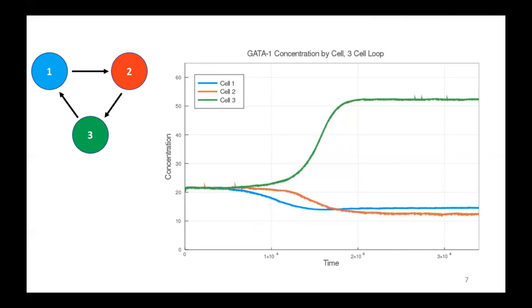simulating three cells communicating in a loop. And what we see is that the expression of GATA1 tells us which fate the cell has selected. So for example, cell three is converging to a state of high GATA1 expression. So that cell is becoming erythroid while cells one and two are becoming myeloid.